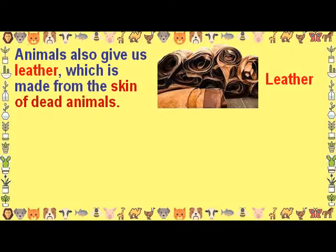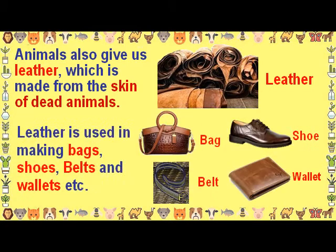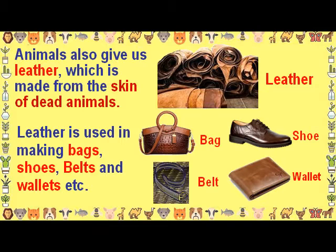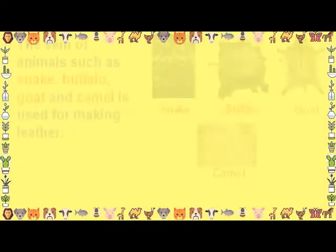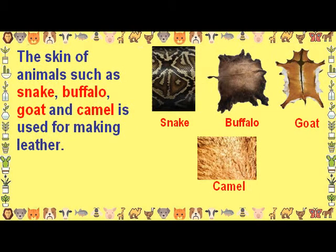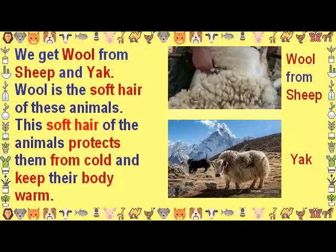Animals also give us leather, which is made from the skin of dead animals. Leather is used in making bags, shoes, belts, and wallets. The skin of animals such as snake, buffalo, goat, and camel is used for making leather.